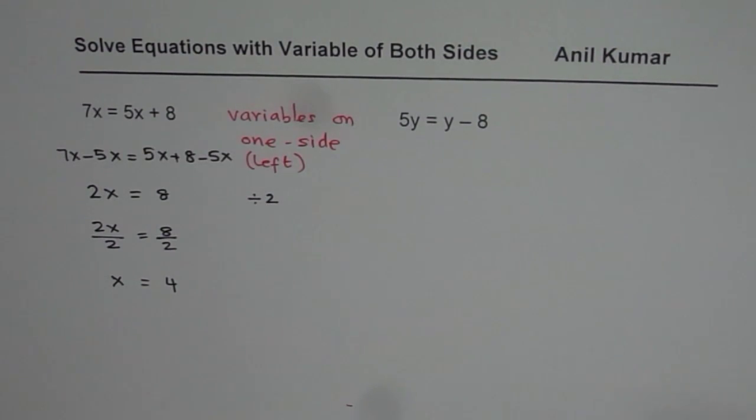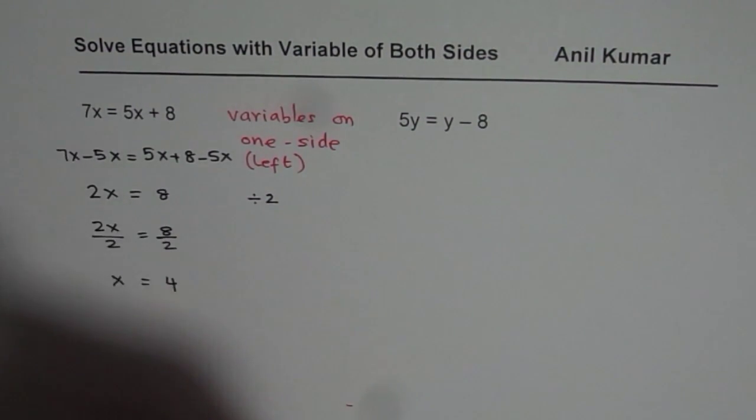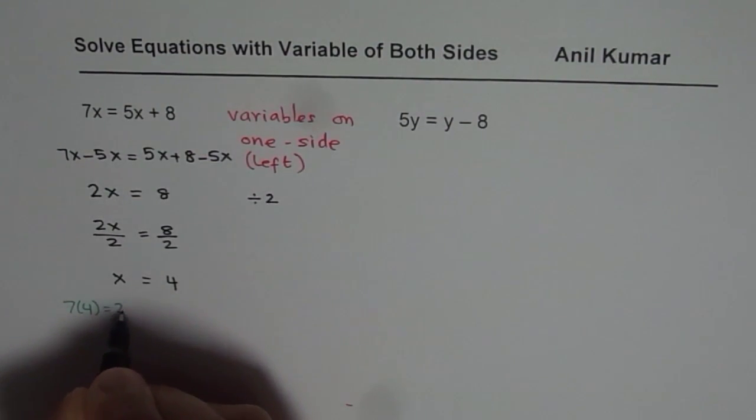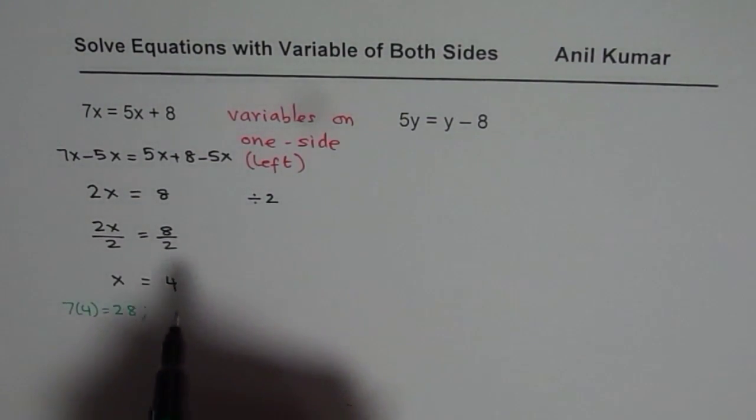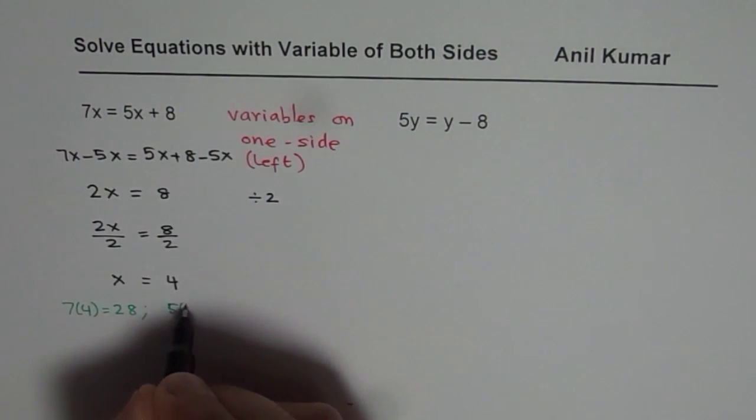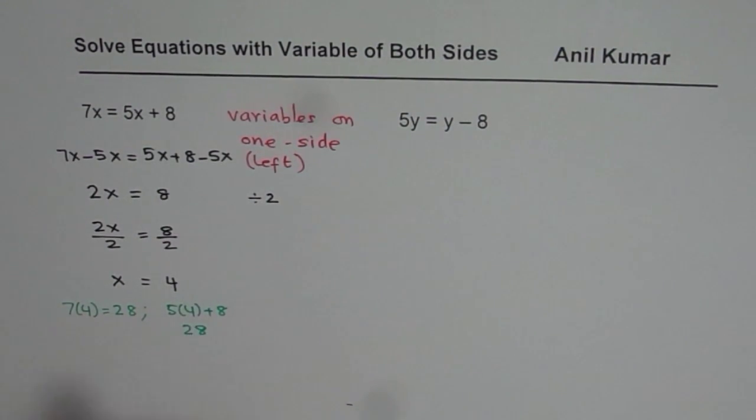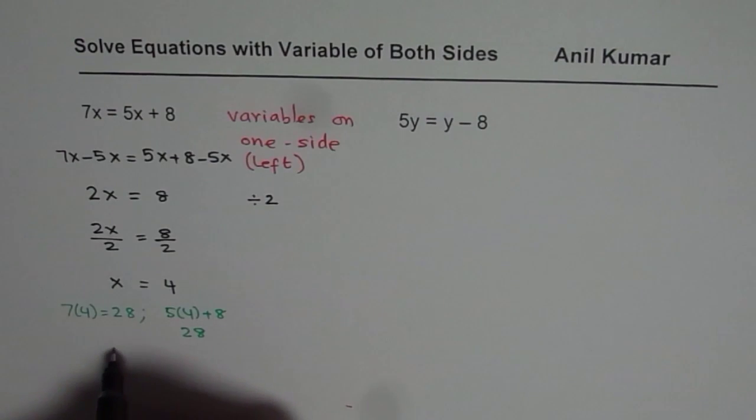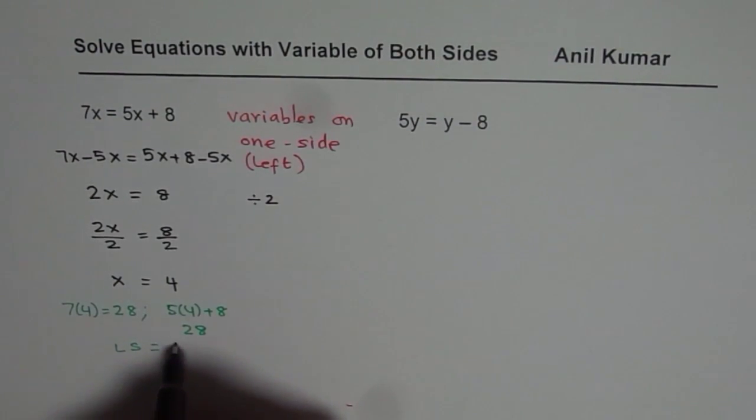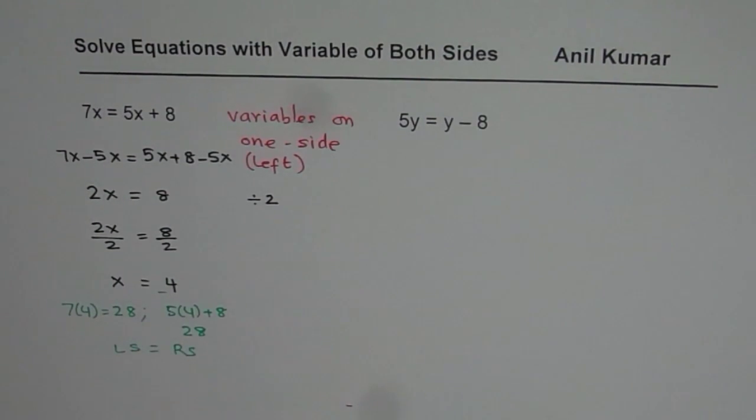At times you can check your answer. So if I substitute 4 here, 7 times 4 is 28. On the other hand if I have 4 here, then I have 5 times 4 plus 8. 5 times 4 is 20 and 20 plus 8 is also 28. So left side equals right side. Since left side equals right side, we have the correct solution.